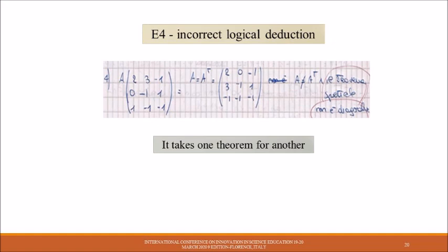Example error type E4: incorrect logical deduction. This kind of error is caused by the application of inappropriate rules or strategies. The student takes one theorem for another. He or she misses the main characterization of the diagonalization with the spectral theorem.